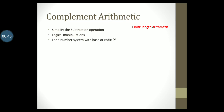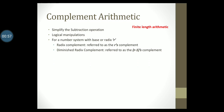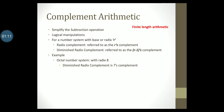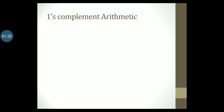For every number system with a base or radix R, there are two types of complements: the radix complement referred to as the R's complement, and the diminished radix complement referred to as the R minus 1 complement. For example, in the octal number system with radix 8, we have the 7's complement and the 8's complement. For the binary number system, the diminished radix complement is the 1's complement.